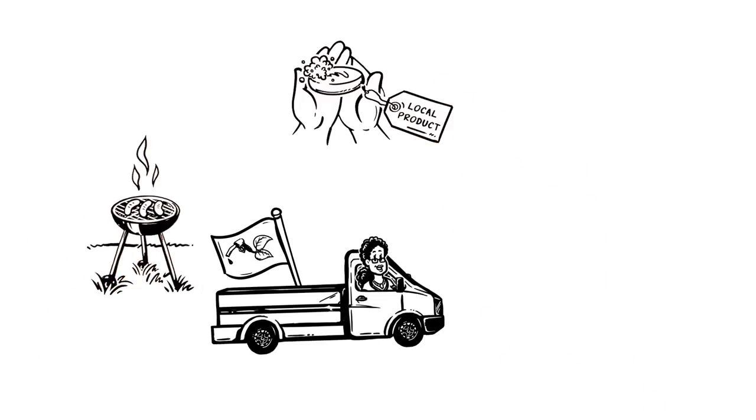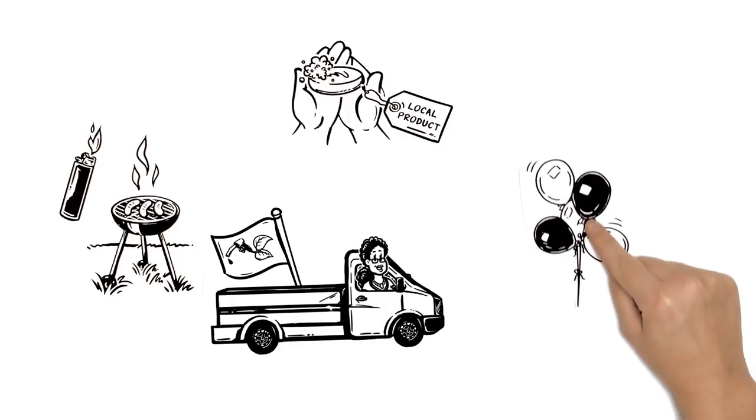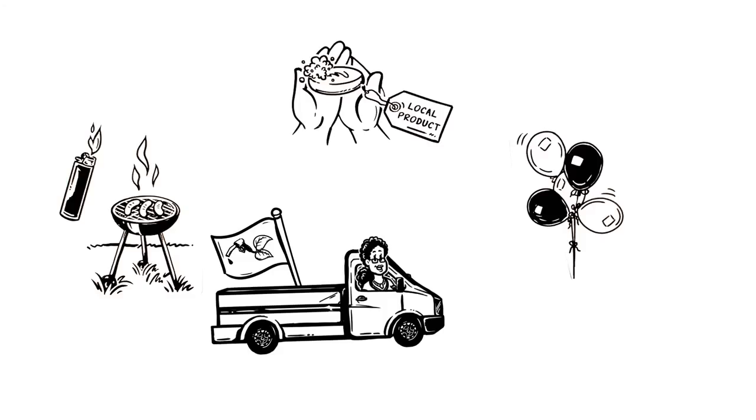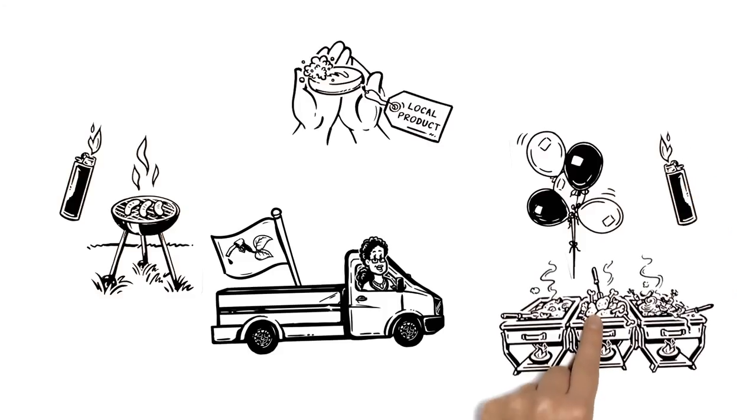When cooking, Peace lights the grill with fire lighters manufactured at the new production site in her neighborhood. At the celebration of all the new jobs in the community, they use bioparaffin to warm the heating plates.